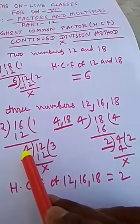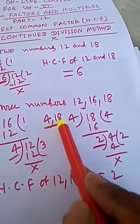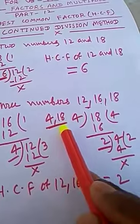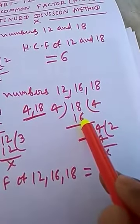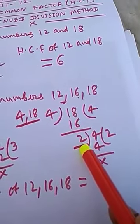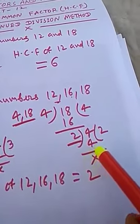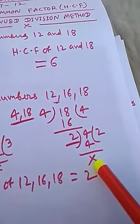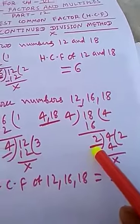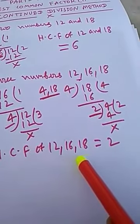Now we consider the HCF of the first two numbers and the third number, that is 4 and 18. We divide 18 by 4: 4 times equals 16, remainder is 2. Now 2 will divide the divisor 4: 2 times equals 4, remainder is 0. So the last divisor is 2, meaning the HCF of 12, 16, and 18 is 2.